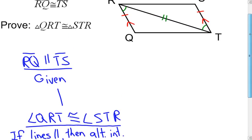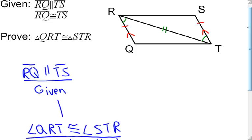So far, in my proof, all I've stated is that I have one set of congruent angles for my two triangles. I'm going to then go back to my other piece of given information that segment RQ is congruent to segment TS. And that was given. Now I have two pieces, one set of angles and one set of sides.